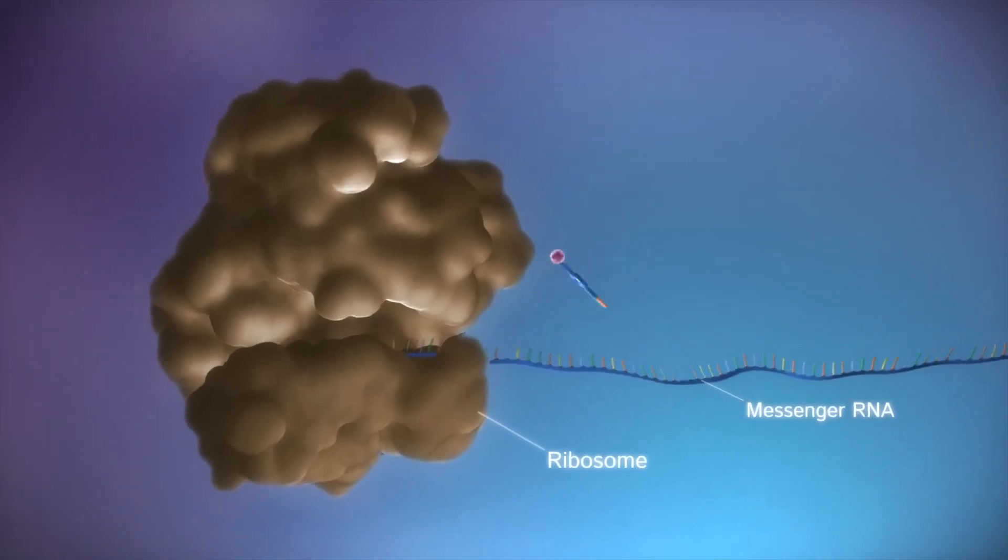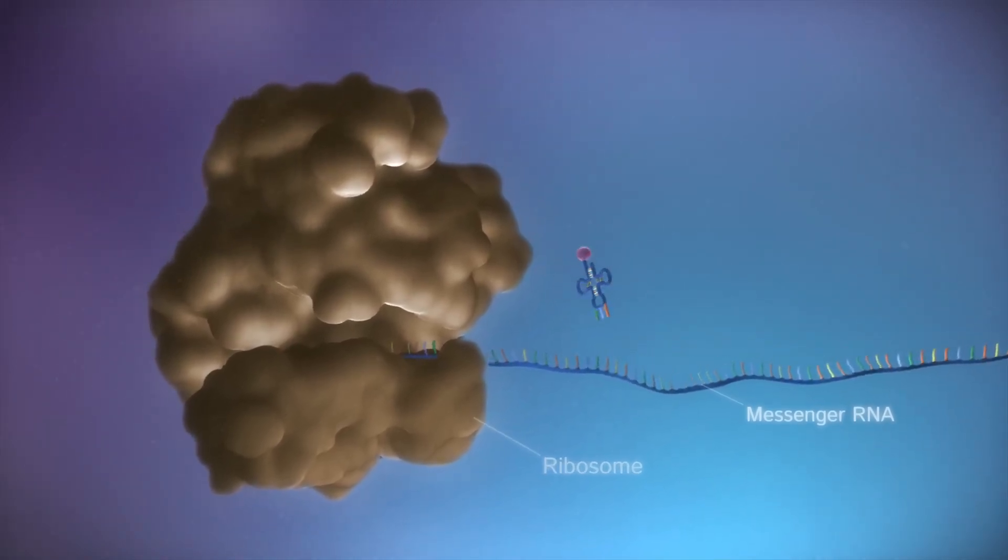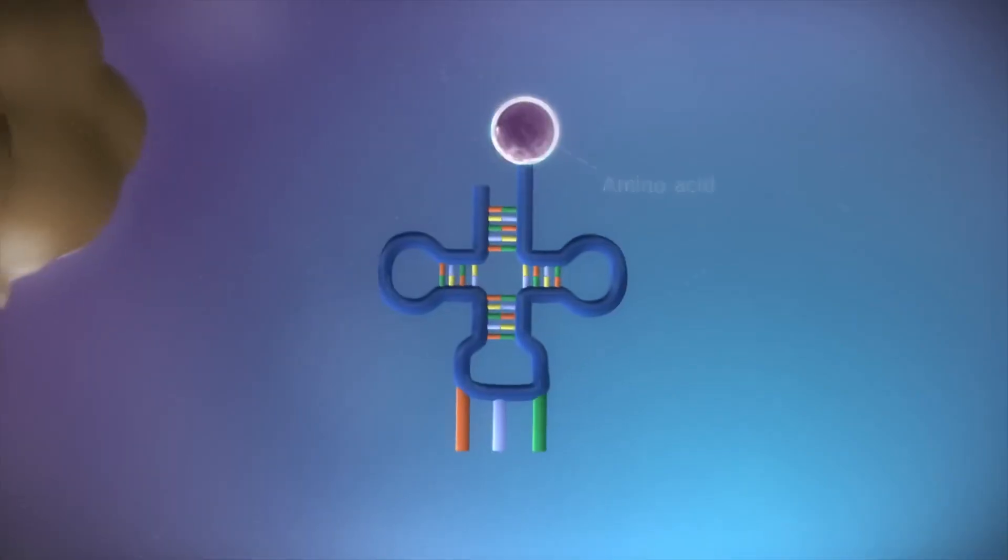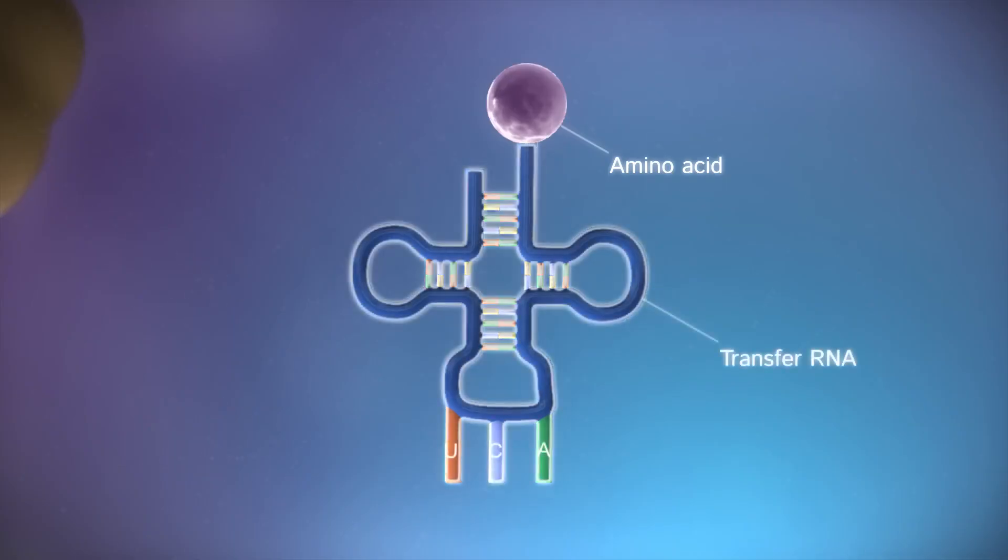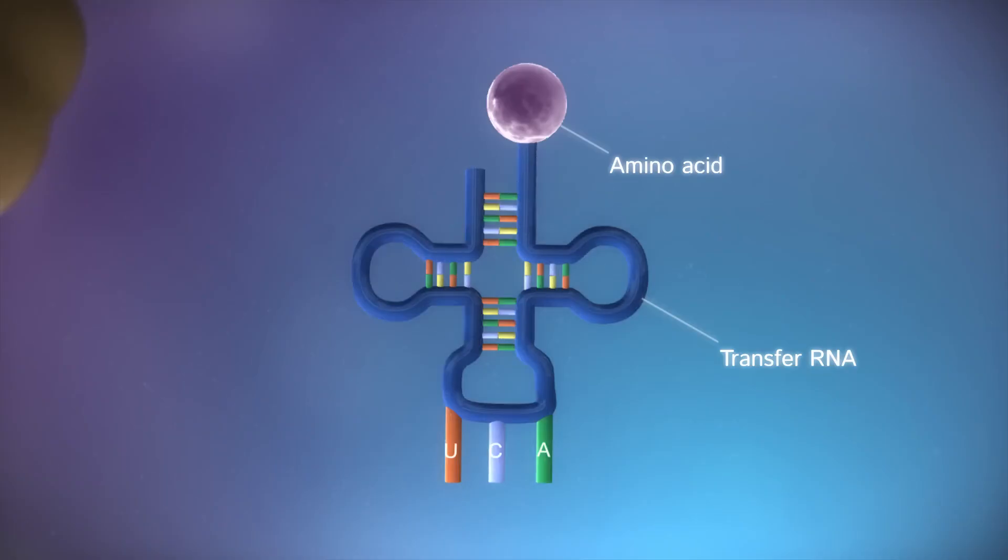The ribosome reads the code in the messenger RNA to produce a chain made up of amino acids. There are 20 different types of amino acid. Transfer RNA molecules carry the amino acids to the ribosome.